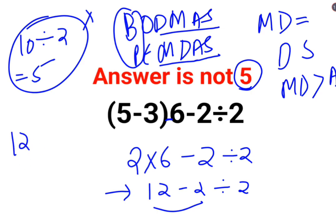So we do 12 minus—2 divided by 2 is 1—so the answer for this one is supposed to be 11.